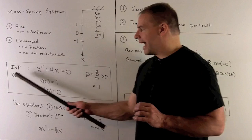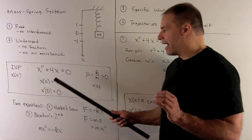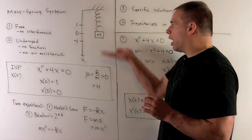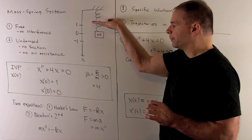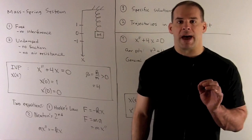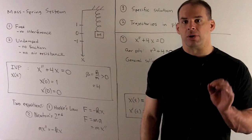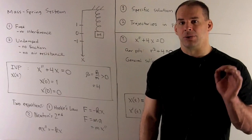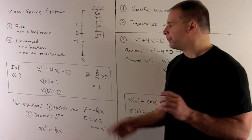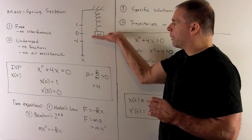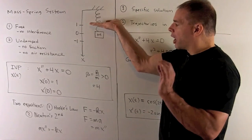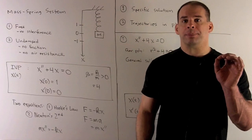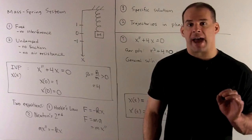We have X as a function of t. At time t equals zero, the height equals one — that is us raising the mass to position one. We also have X prime of zero equals zero. Since we are talking about motion, the derivative is velocity. At t equals zero, we are at position one and the mass is not moving, so as soon as we release, the mass is in free fall and the spring starts acting on it.